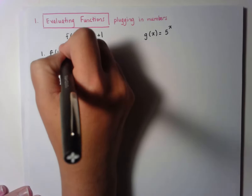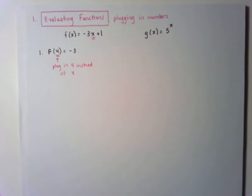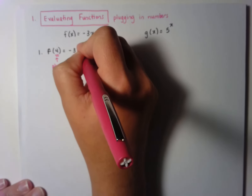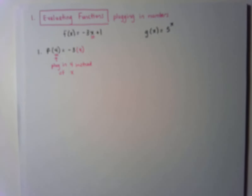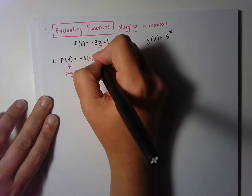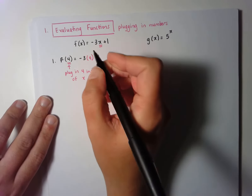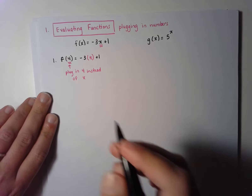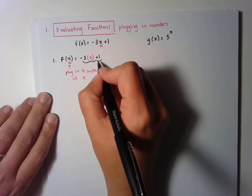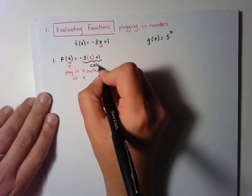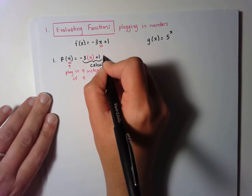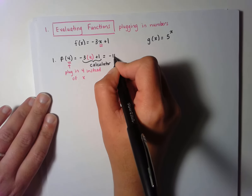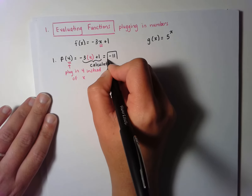So I would go to the f of x equation and replace the x with the number 4. I'm going to copy down the equation: negative 3, then write a 4 in parentheses instead of the x, and also copy down the plus 1. My next step is to type this in on my calculator, and when I do that I should get negative 11, which is the answer to this problem.